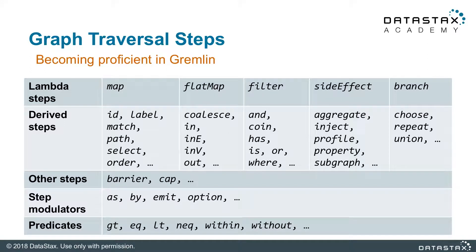Lambda steps are the foundational constructs in the Gremlin language. They are the most general steps that can be used to implement most other steps in Gremlin. However, they are not the easiest traversal steps to use and usually the least efficient because they are hard to optimize. As a result, lambda steps are disabled by default in DataStax Enterprise Graph. Later we can take a closer look at these steps, mostly for educational purposes. Derived steps, on the other hand, are useful in practice — most traversals will typically rely on around 10 most commonly used steps, so learning all of them is not necessary to start using Gremlin.